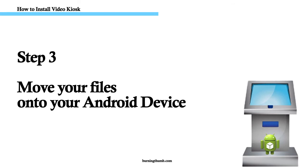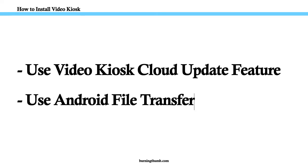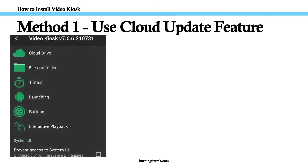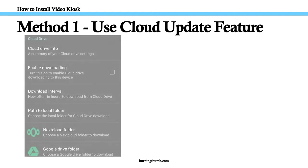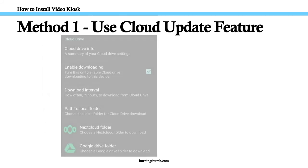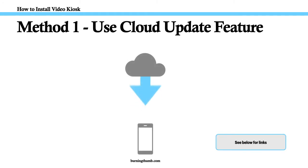Step 3: Move your files onto your Android device. You can move your files using the Video Kiosk Cloud Update feature or using Android File Transfer. To use the integrated Cloud Update feature, configure Video Kiosk with the location of the Video Kiosk folder on your cloud drive and the location of the Video Kiosk folder on your Android device. Then enable downloading. The files will appear on your Android device in a few minutes. If you want to download right away, launch Video Kiosk and tap the screen — download will begin immediately.